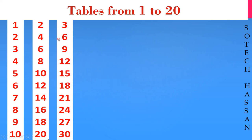3 2s are 6, 3 3s are 9, 3 4s are 12, 3 5s are 15, 3 6s are 18, 3 7s are 21.